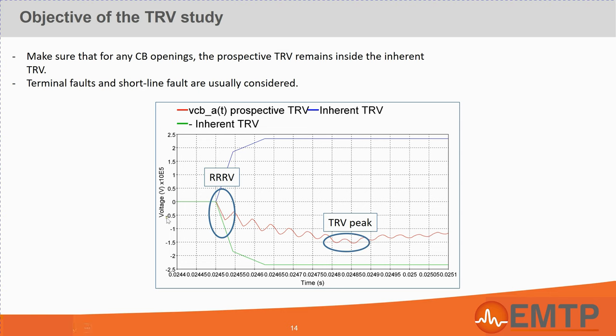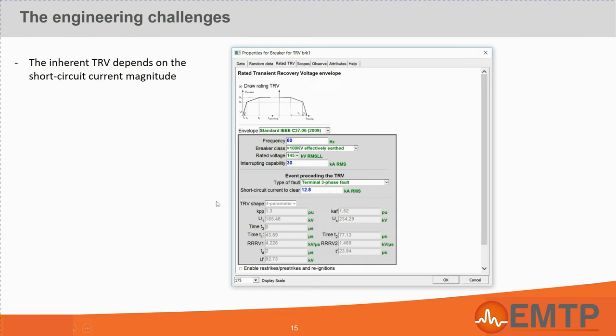Of course, there are many challenges around TRV analyses and we are putting a lot of effort in training our technical support staff and adding many features in EMTP to make sure these studies are as easy as possible for our users. The first challenge is actually to interpret the standards. Because of the high complexity of the circuit breaker current interruption phenomenon, the standards addressing this issue contain a lot of information which are highly case-dependent.